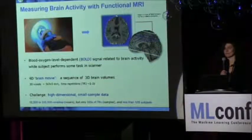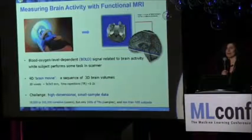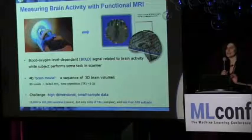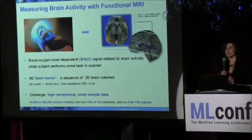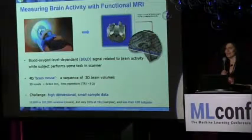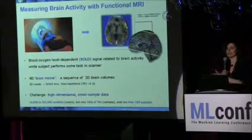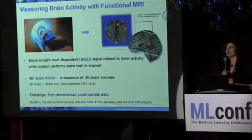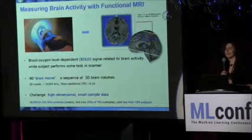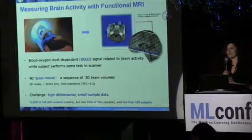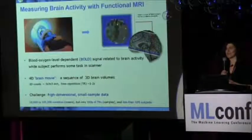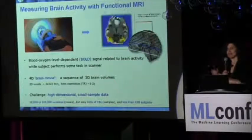We don't really need to know the physics of the process. It measures blood oxygen level dependent signal that is relevant to brain activity, but the relationship is very indirect. What you see is not really activity of neurons. Each voxel, which is three millimeter by three millimeter by three millimeter, contains millions of neurons. So it's a very indirect measure of brain activity.